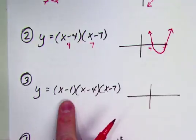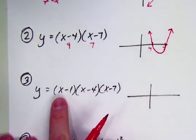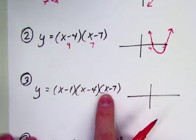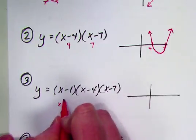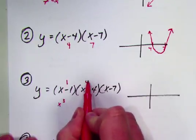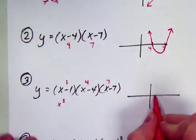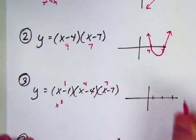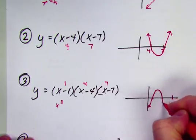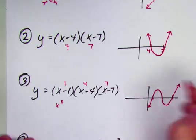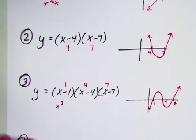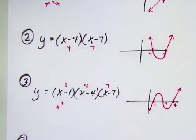What about (x-1)(x-4)(x-7)? This is going to do something a little different because it's going to hit 3 times. If I multiply these out, I would have an x to the third power. So I know I'm going to hit at 1, 4, and 7. I end up with a graph that hits at 1, comes back down, hits at 4, comes back up, and hits at 7. Let's get into the details of why these do what they do.